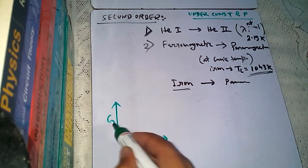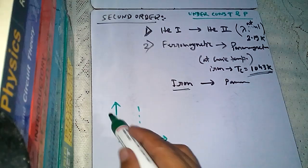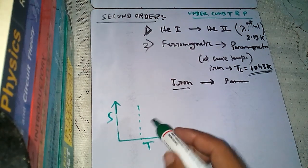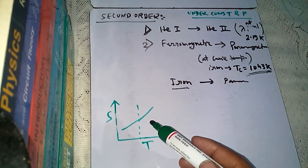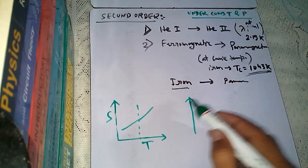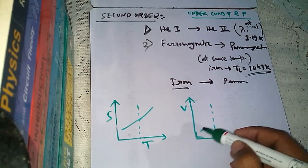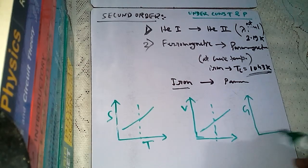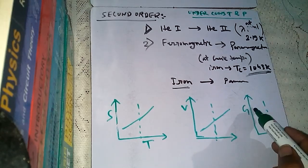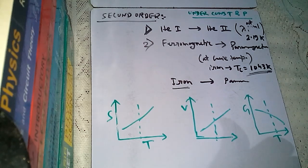For second order phase transitions, the entropy-temperature graph is continuous — entropy does not change discontinuously. Similarly, the volume-temperature graph is continuous. The Gibbs free energy G versus temperature graph is also continuous. These are the standard graphs for second order phase transitions. We have already seen the corresponding graphs for first order phase transitions. These are the key points to remember. Thank you.